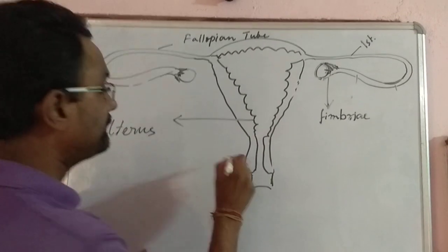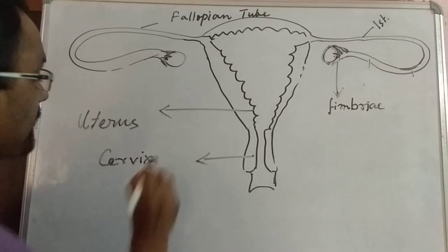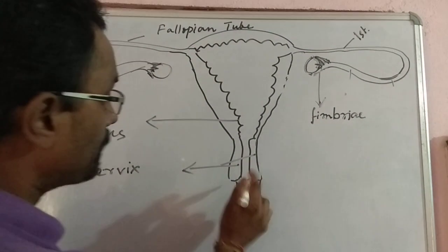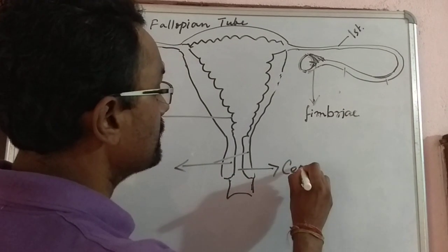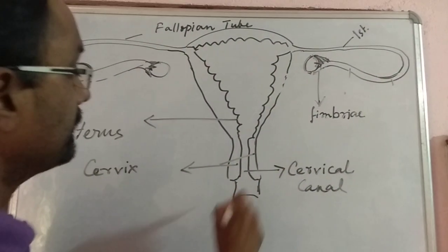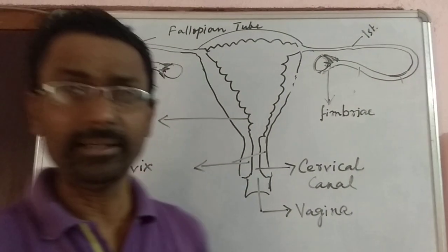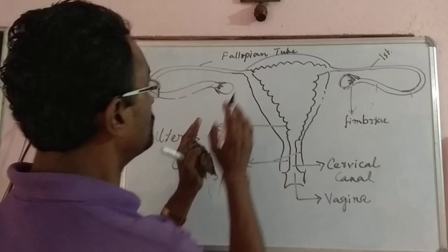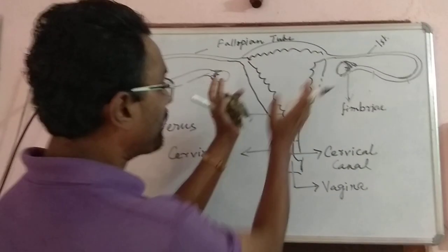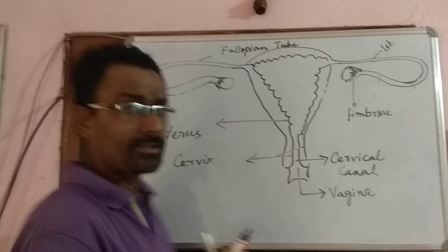After the uterus comes the cervix — C-E-R-V-I-X. In between the two cervical walls is the cervical canal — C-E-R-V-I-C-A-L C-A-N-A-L. Then this structure is the vagina, which is a tubular structure. At the top of the uterus is the uterine fundus. We have discussed one pair of fallopian tubes.